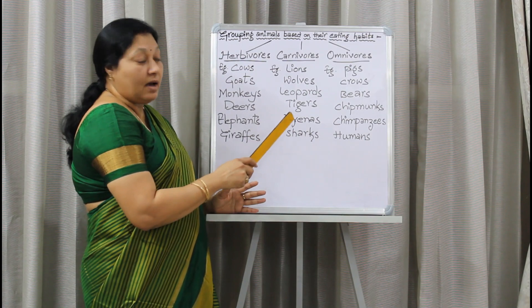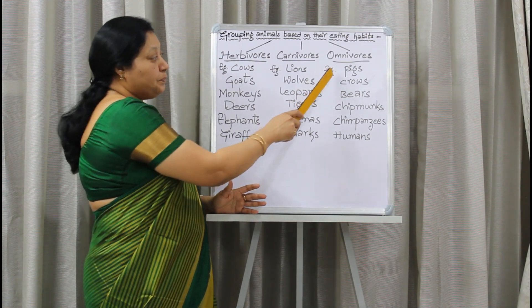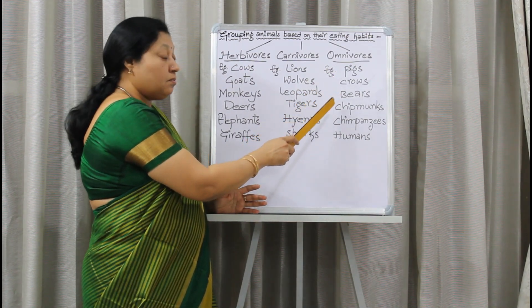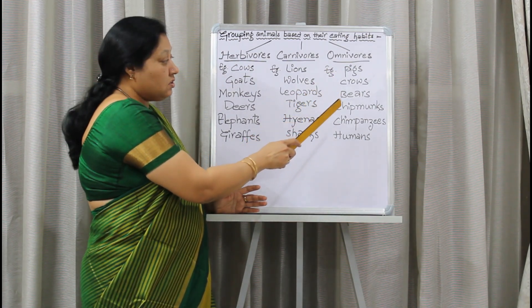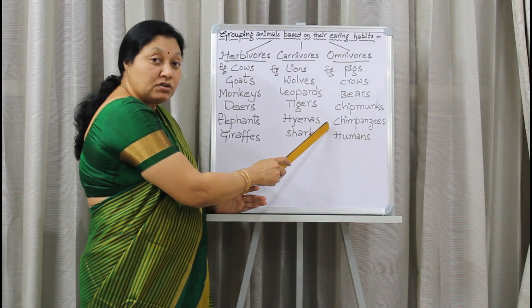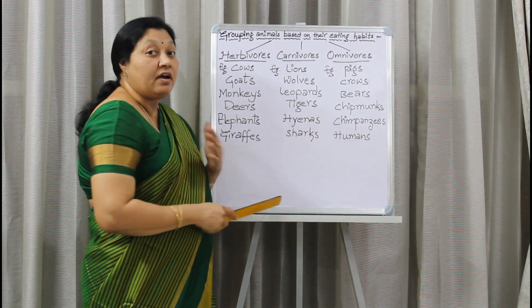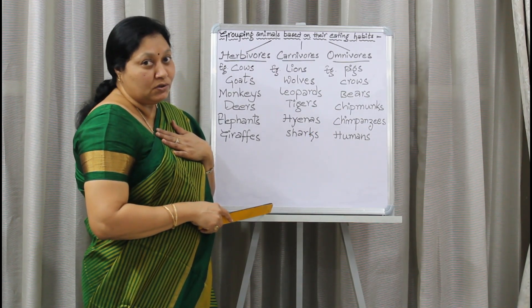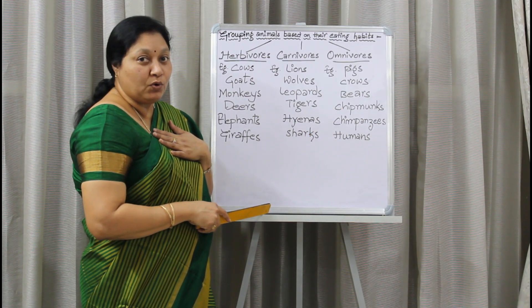Let us look at a few examples. Pigs, crows, bears, chipmunks, chimpanzees, and we human beings are also omnivores.